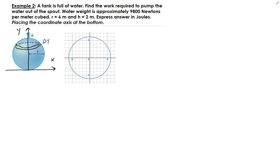Going back to this idea with the representative piece — the top circle has a smaller area than the bottom circle. But remember, we're assuming that delta y is approaching zero, so delta y is getting infinitesimally small. In this case we can assume that this is a very flat disk with an infinitesimally small width, so we can treat it as such.